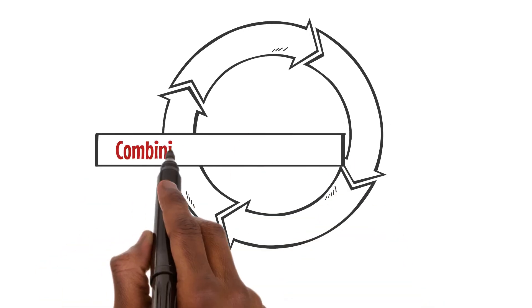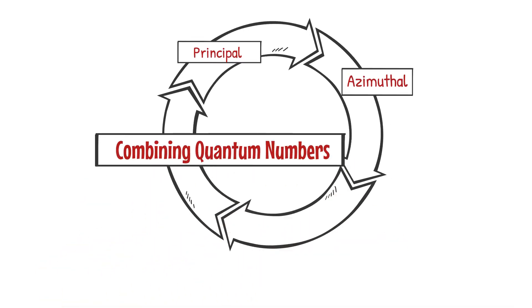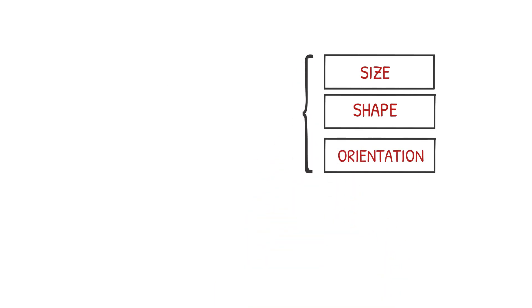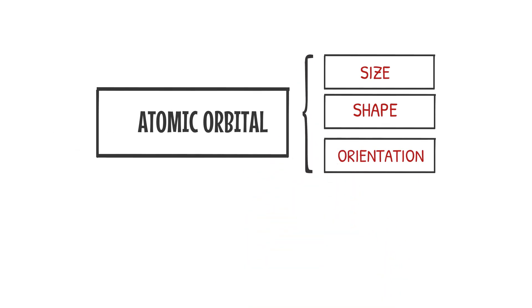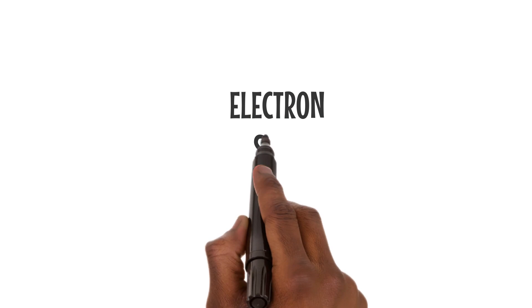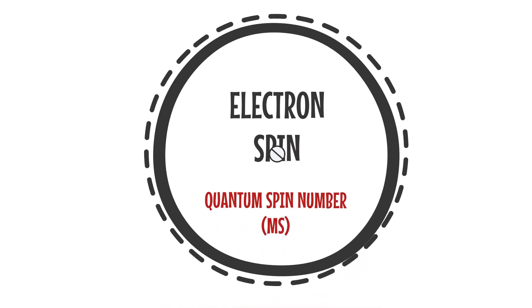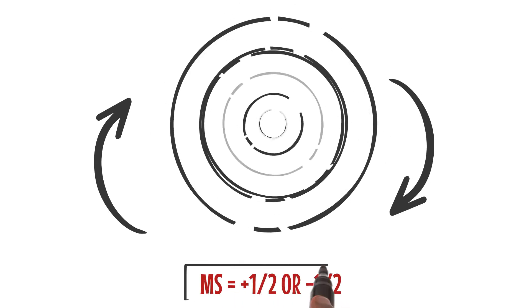Combining these quantum numbers allows us to describe the unique set of properties that define each electron in an atom. These properties include the size, shape, and orientation of the atomic orbitals. The electron spin, represented by the quantum spin number ms, also plays a role, but it's not derived from the Schrödinger wave equation. It determines the direction of the electron spin and can have values of plus 1/2 or minus 1/2.